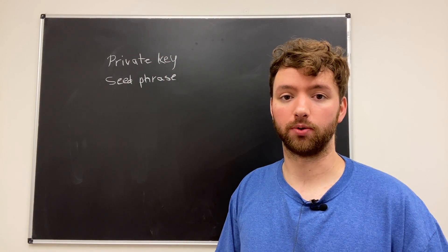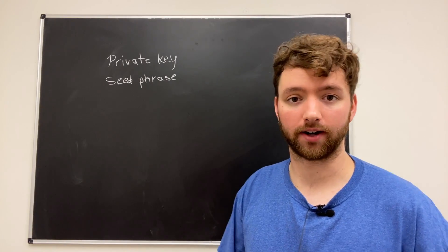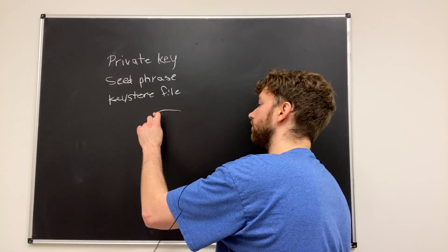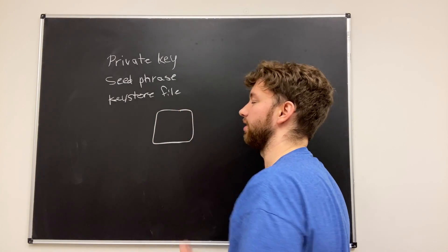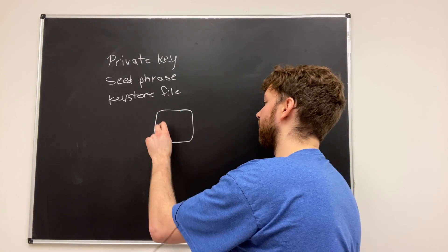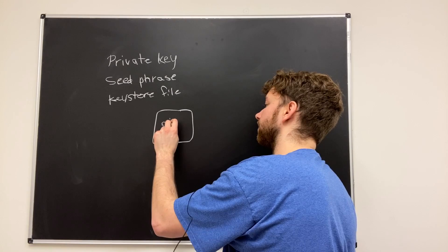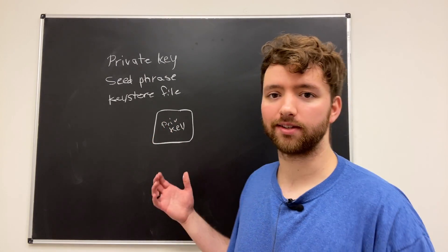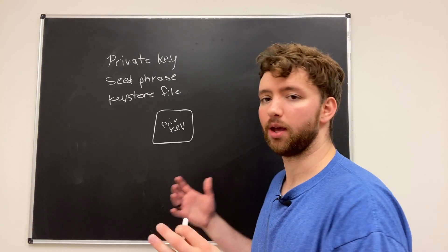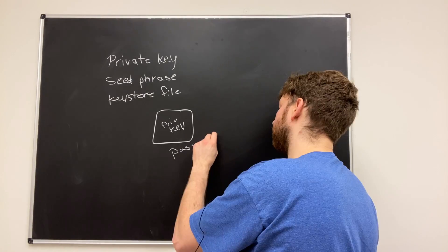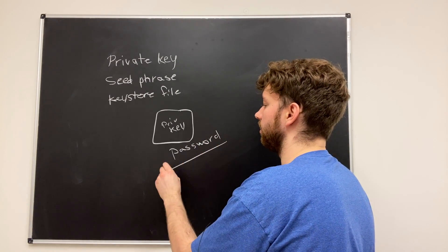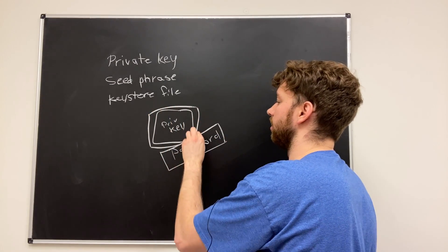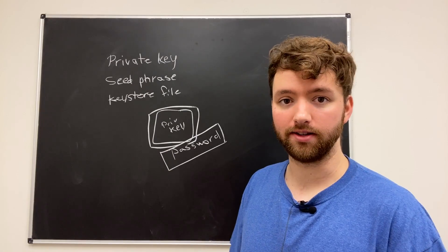Now the third form of security when working with wallets is a key store file. Now this one, it's pretty much just literally a computer file that stores your key. So your private key is going to be inside of this file. And the way you can access this file is with a passphrase or just a password.